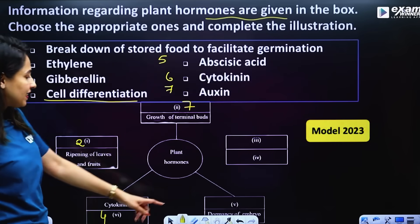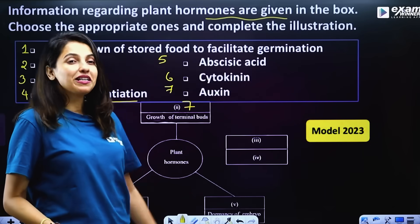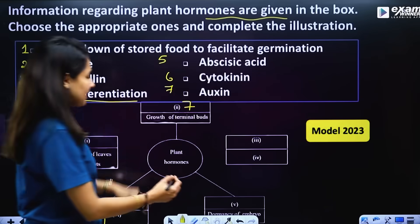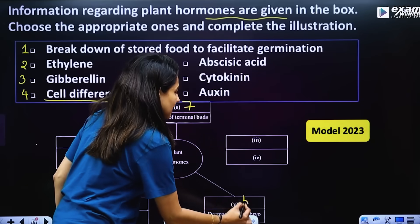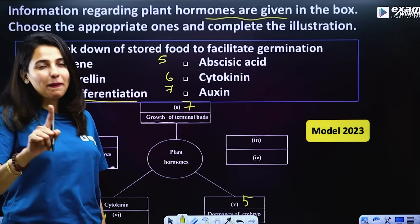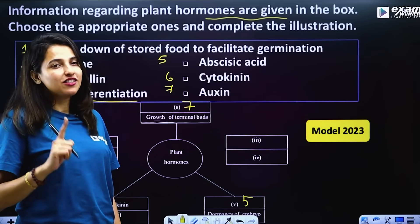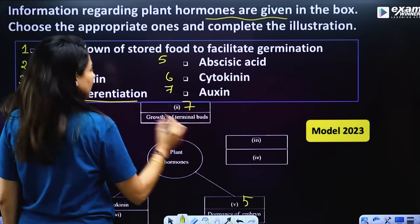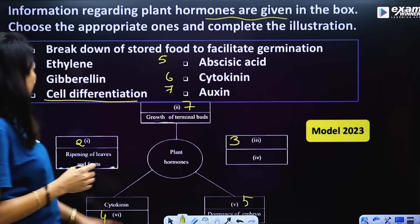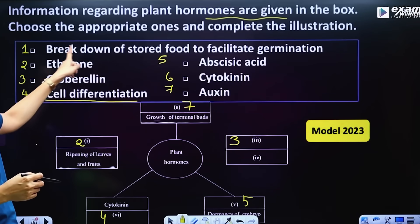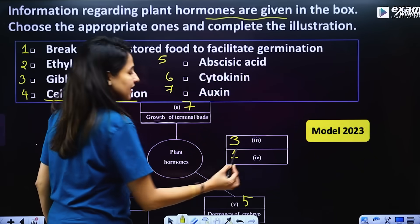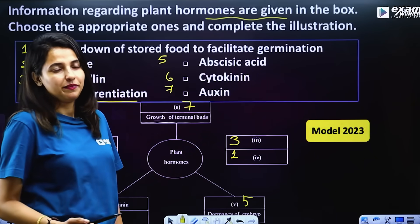Then, dormancy of embryo — that is Abscisic acid. And Gibberellin — its function is breakdown of stored food and facilitating seed germination.